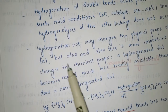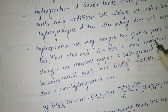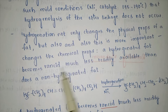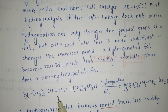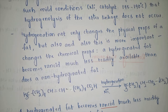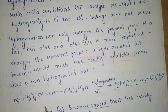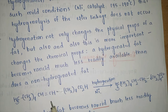Hydrogenation not only changes the physical properties of a fat but also its chemical properties. A hydrogenated fat becomes rancid much less readily than a non-hydrogenated fat. In the naturally occurring system, double bonds can be attacked by atmospheric oxygen, leading to degradation. Hydrogenation converts the double bonds to single bonds, leaving no site for oxygen attack, so there is no rancidity.